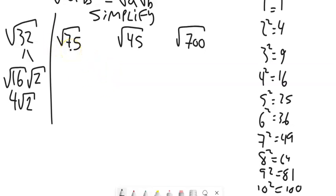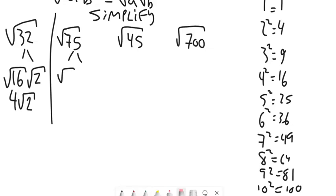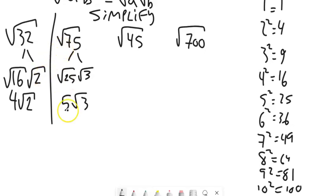Square root of 75: 25 goes into it. So I'm going to think of 75 as 25 times 3. Square root of 25 is 5. So this is 5 root 3. Notice we've done as much of the square rooting as we can.